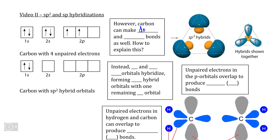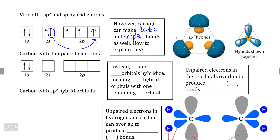In this video, we're going to examine how carbon can form both double and triple bonds in addition to four single bonds. The explanation begins the same way as before, by taking the paired electron from the 2s subshell and moving it to the unoccupied p orbital in the 2p subshell. However, this is where the hybridization occurs differently.